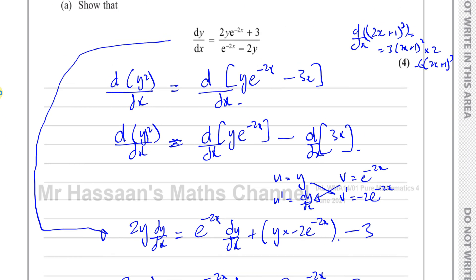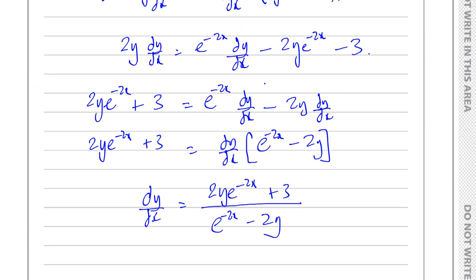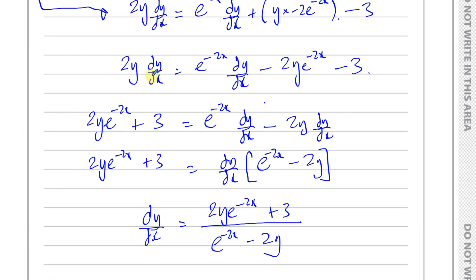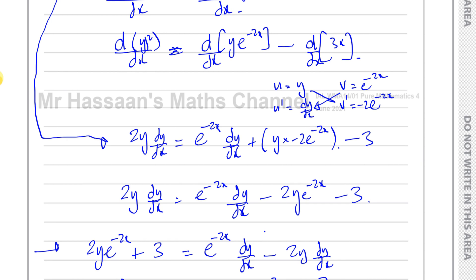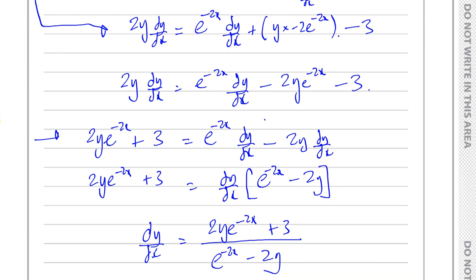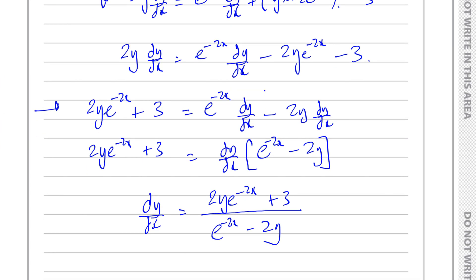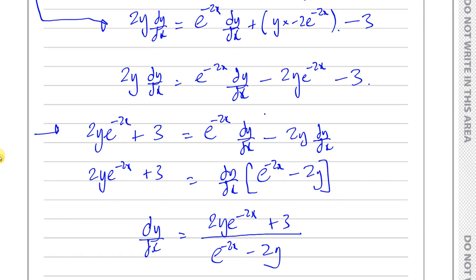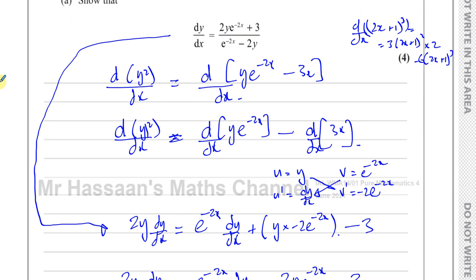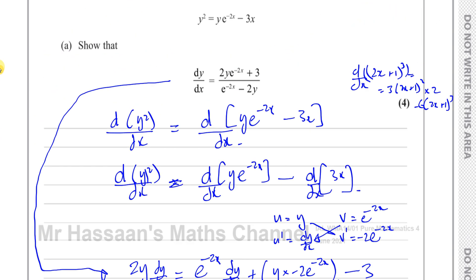That's exactly what we had to show. If we had kept dy/dx on the other side, we'd have got minus 2y e to the power of minus 2x minus 3 over 2y minus e to the power of minus 2x, and we'd just multiply top and bottom by minus 1. Looking at how the answer is expressed, put things on the side which matches the required format — that makes life easier. That's the answer to part A.